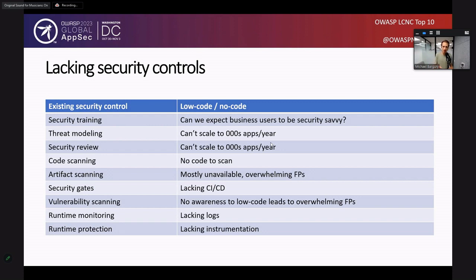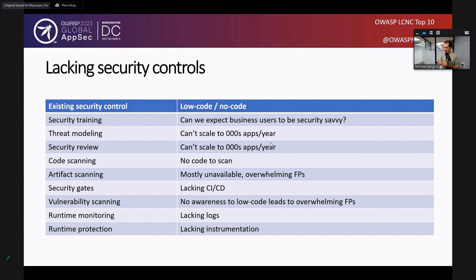Most platforms do not even produce artifacts for you to scan. Some platforms give you binaries to scan, others won't, and even if you can scan the binaries, it's very difficult to carve out what's about the business logic versus the code generation part. Vulnerability scanning is difficult because it's hard to understand what is part of your business logic from the outside. Logs are sometimes lacking and you can't do anything about it because it's running on somebody else's cloud. And instrumentation is not really possible. This is just background to understand why we need to focus on Low-Code, No-Code as a separate discipline within application security.